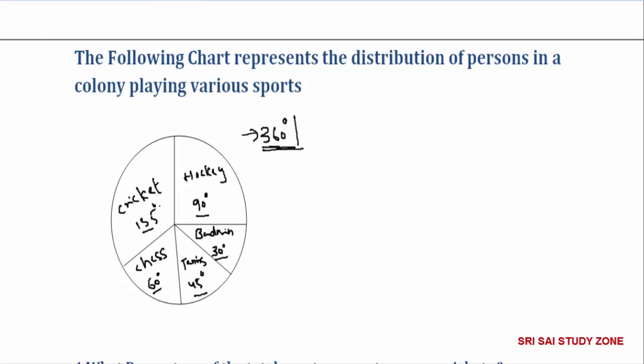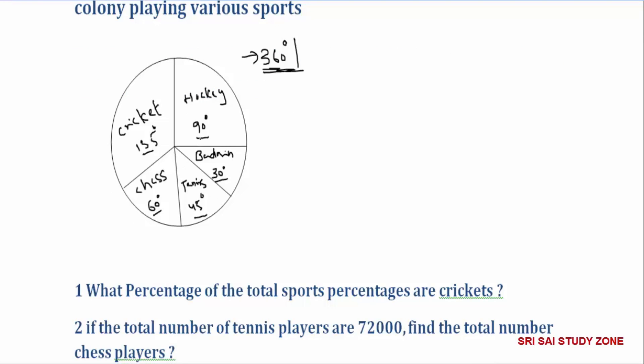Question: What percentage of the total sports persons are cricketers? Since 360 degrees equals 100 percent, we calculate 100 into 135 divided by 360. Starting the calculation using tables: 72 goes into 200 a certain number of times, giving us one answer.